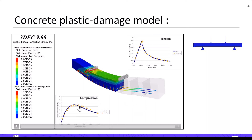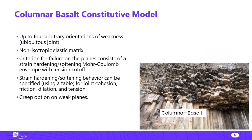Another new constitutive model is the columnar basalt model, developed to model columnar basalt formations seen in China where large dams are being built. It's essentially an enhanced ubiquitous joint model — while the standard ubiquitous joint model allows one plane of weakness, this model allows up to four planes of weakness, producing rich and interesting behavior.